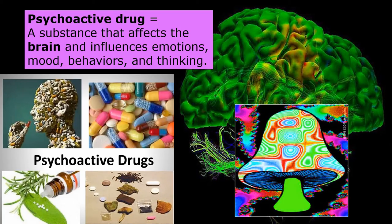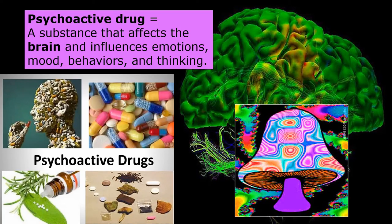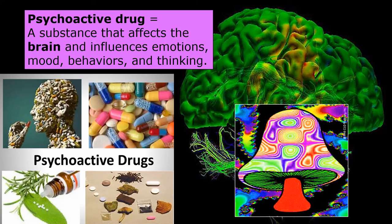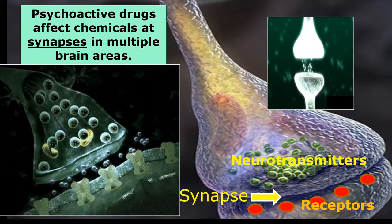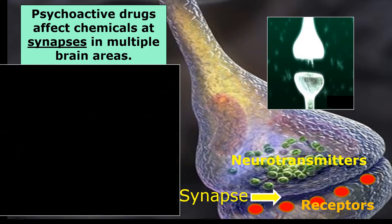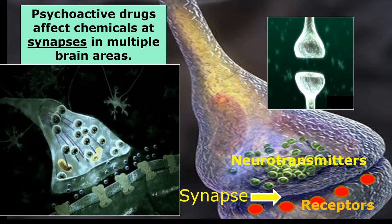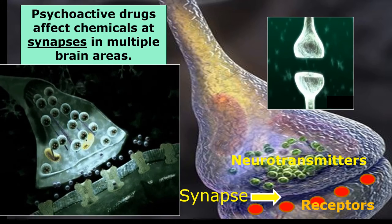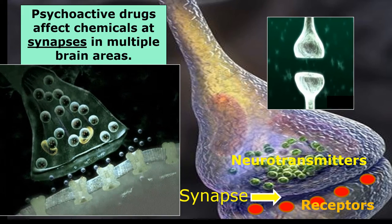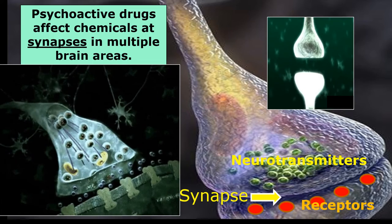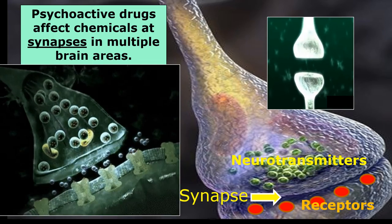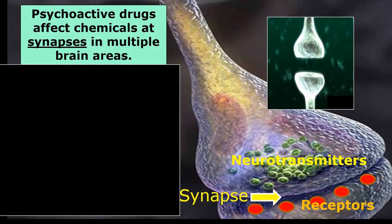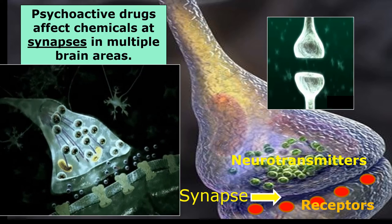A psychoactive drug is any substance that affects the brain and therefore influences your emotions, your mood, your behaviors, and your thinking. Psychoactive drugs almost always affect chemicals at the synapses in multiple brain areas. A synapse is the place where one brain cell sends a signal to another brain cell using chemicals called neurotransmitters that are received by other chemicals called receptors, and this causes a chemical reaction which results in communication between brain cells.